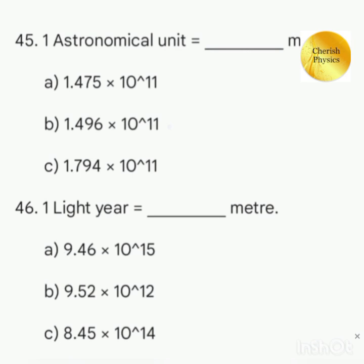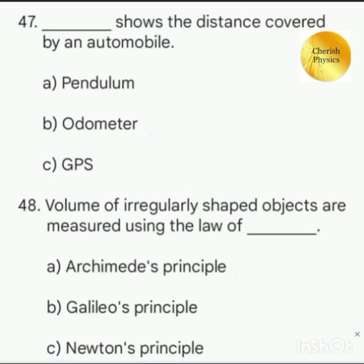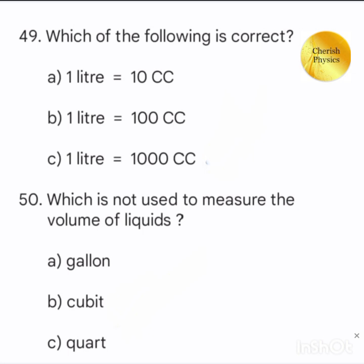One light year is equal to dash meter. Which shows the distance covered by an automobile. Volume of irregularly shaped objects are measured using the law of. Which of the following is the correct one?